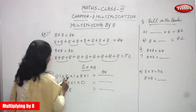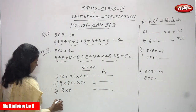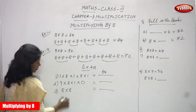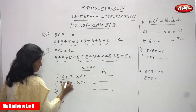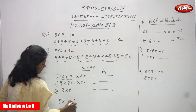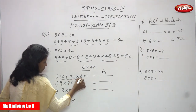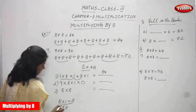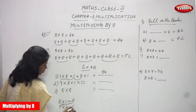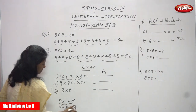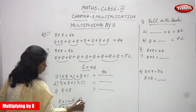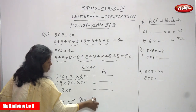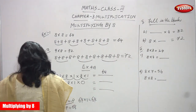1 into 8 is 8; 8 into 1 is 8; 8 into 8 is 64; 64 into 1 is 64. This is the answer I have written here.